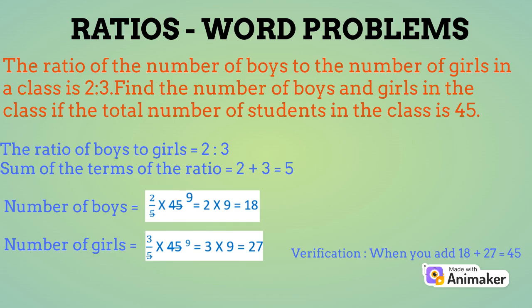Similarly, to find out the number of girls in the class, you will put 3 by 5 into 45. Upon simplification, you will get 27 as the answer.